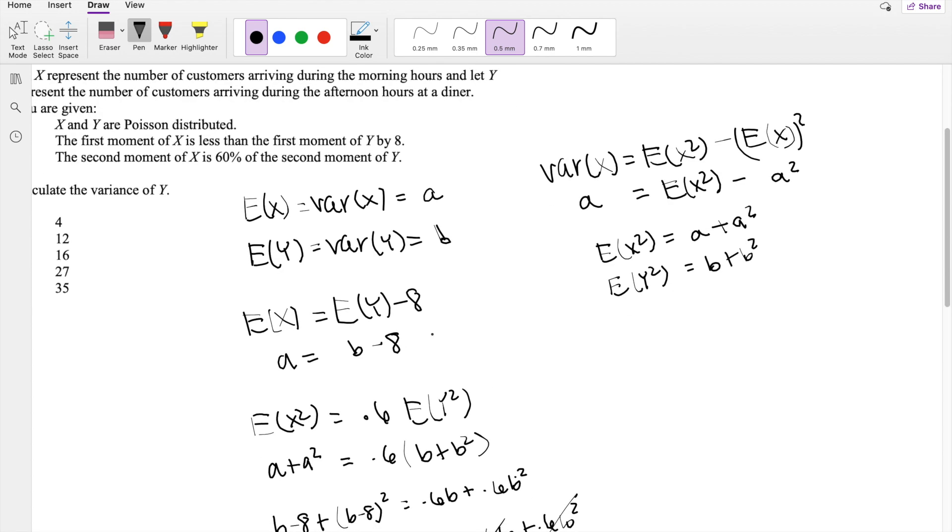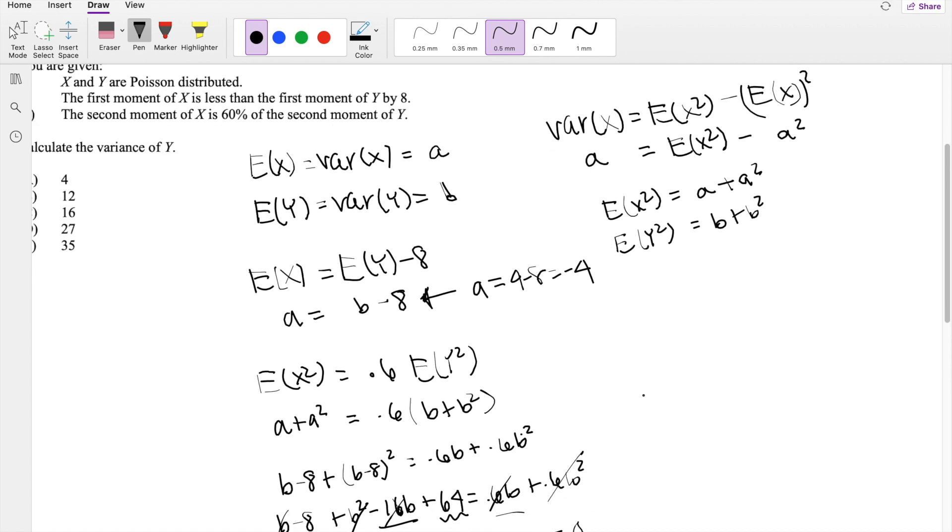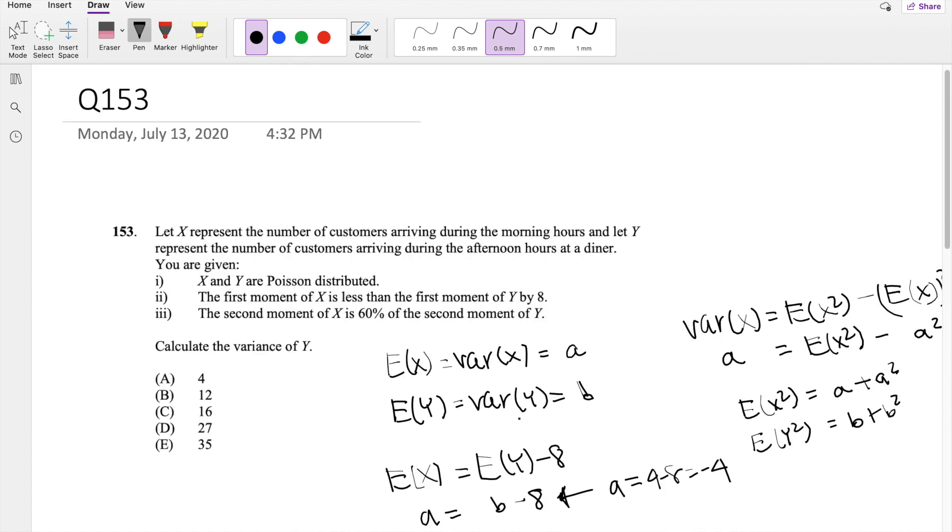Okay, so, but the thing is, if we plug in, let's say, 4 in here, then that would make a equal to 4 minus 8, which is negative 4. And we know variance can't be a negative number because it's measuring the range, so then that only leaves 35 to be our valid answer. So the answer of the variance of Y is equal to b, then we found b was equal to 35, our answer E.